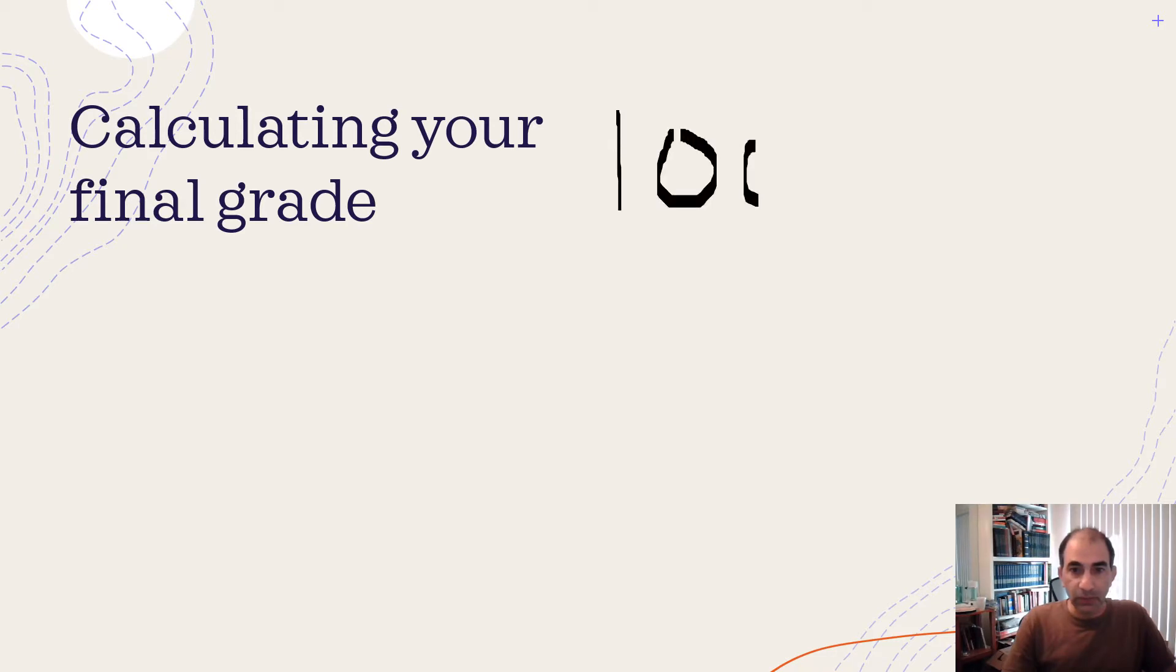Your class is worth 100 points, 100% of your grade. At the end of the semester, you need a total of 90 points for an A, 80 points for a B, 70 points for a C, 60 points for a D, you get the idea.